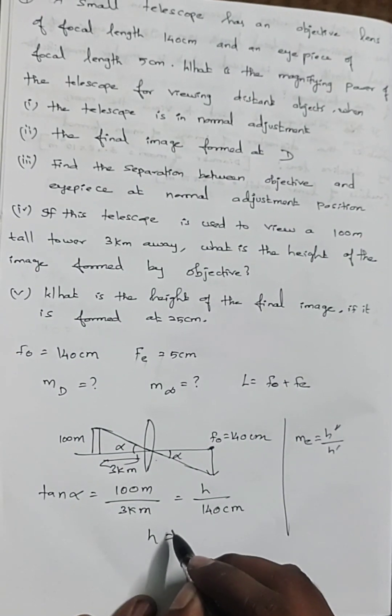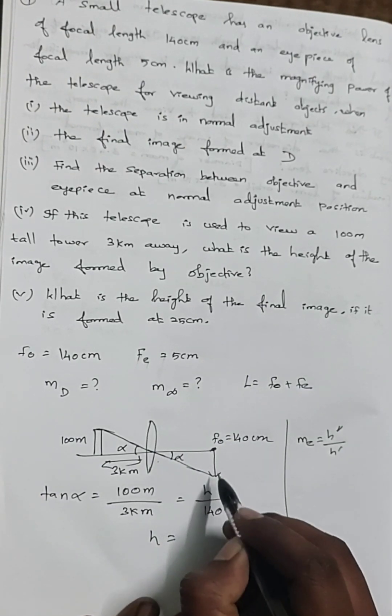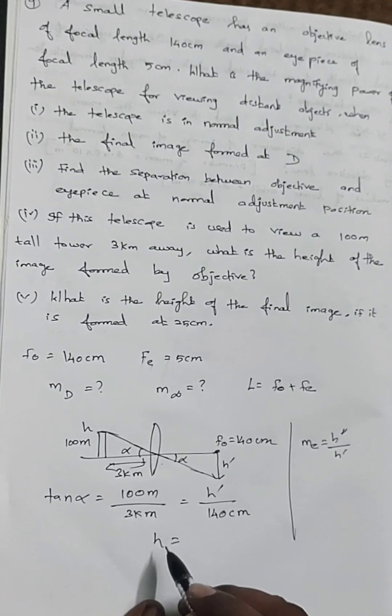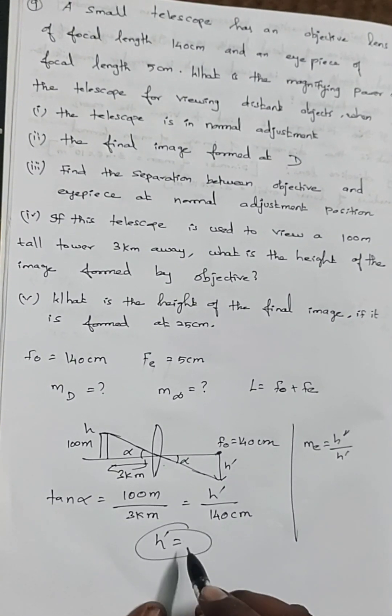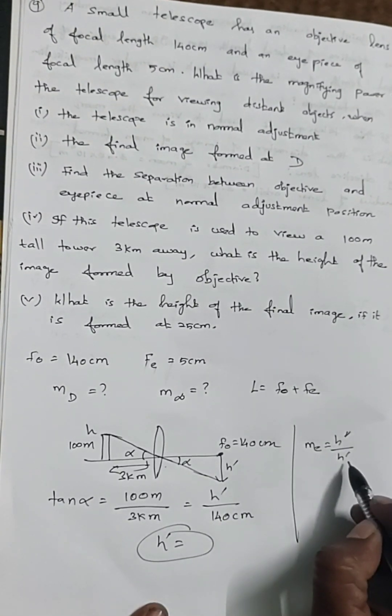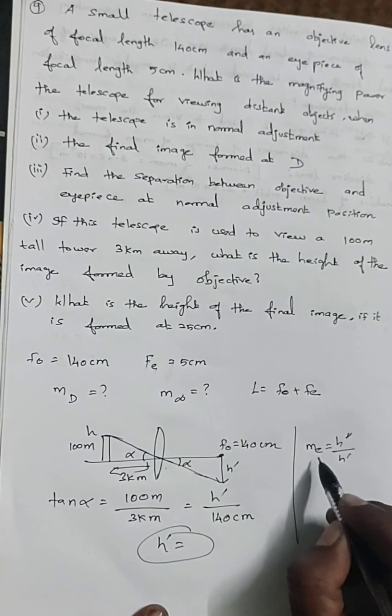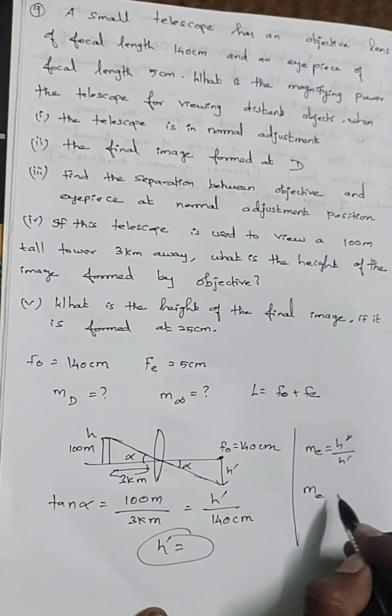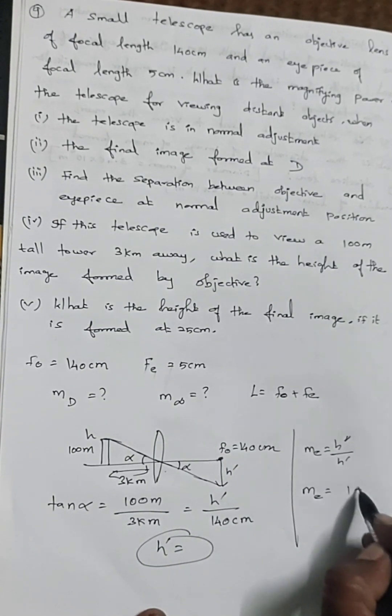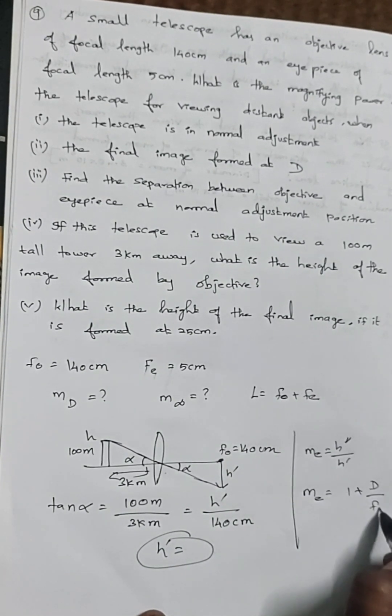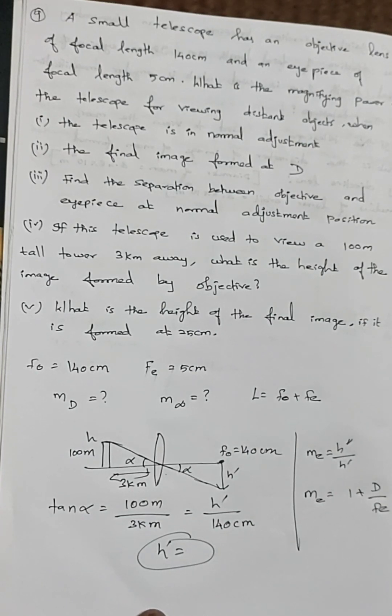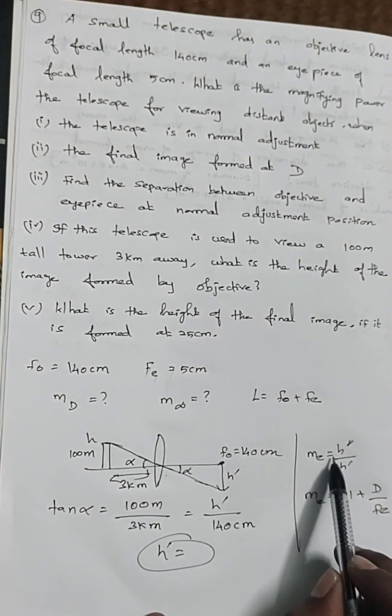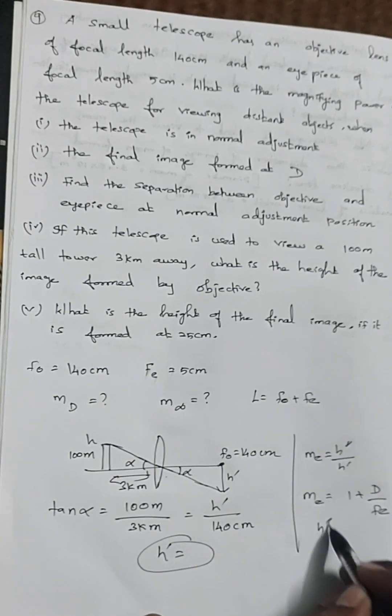We know h dash from the fourth question and we need to find m_e. For finding m_e, the eyepiece alone will act as a simple microscope, so the formula is 1 plus d by f_e. With this formula we can find m_e, then substitute it and find h double dash.